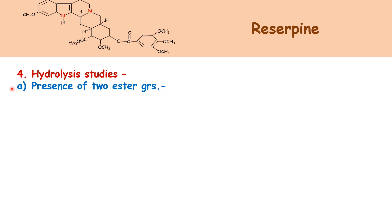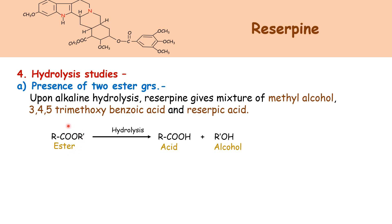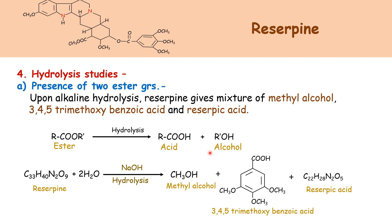Then the next is hydrolysis studies. In that, we first prove the presence of two ester groups. Upon alkaline hydrolysis, reserpine gives a mixture of methyl alcohol, 3,4,5-trimethoxybenzoic acid, and reserpic acid. Ester upon hydrolysis gives acid and alcohol, and reserpine upon hydrolysis gives methyl alcohol, 3,4,5-trimethoxybenzoic acid, and reserpic acid. Formation of these products indicates that reserpine contains two ester groups. These are the two acids and there is one alcohol.